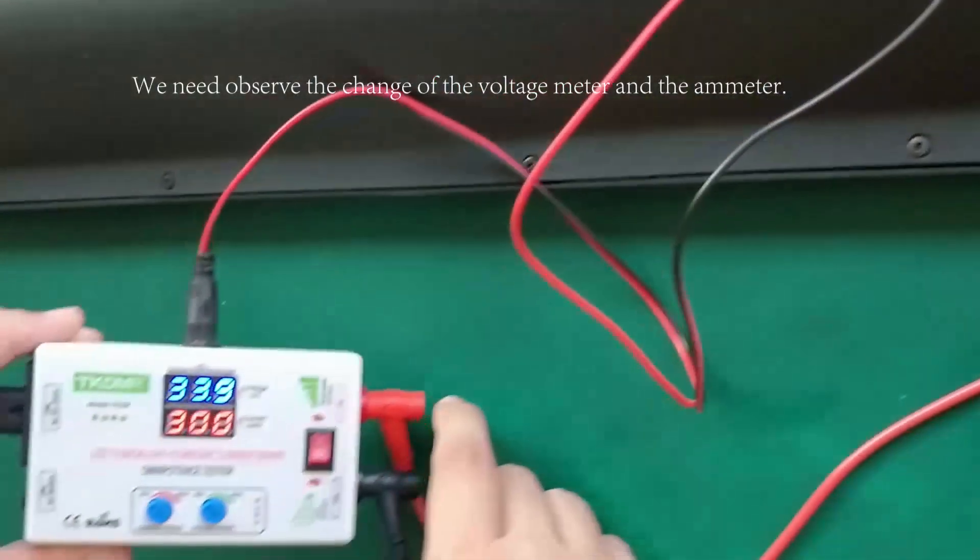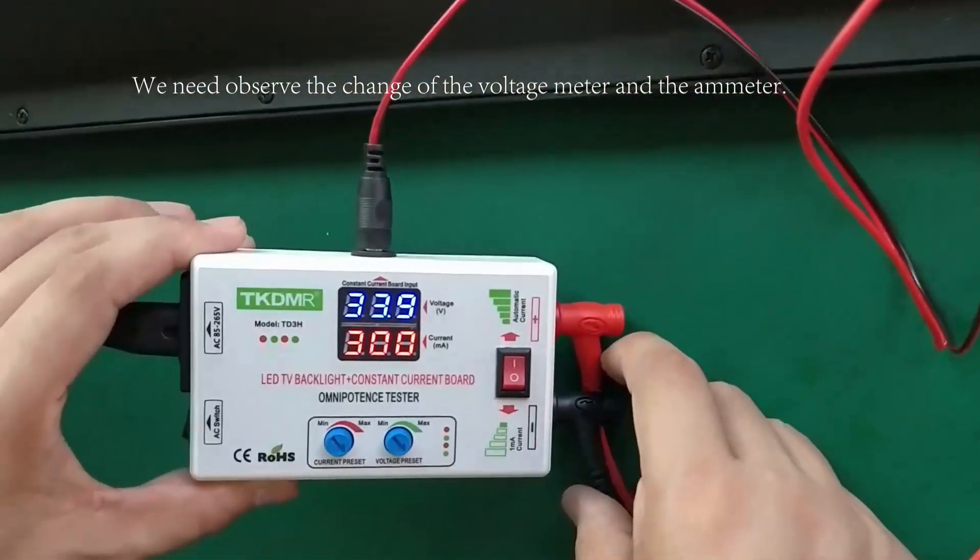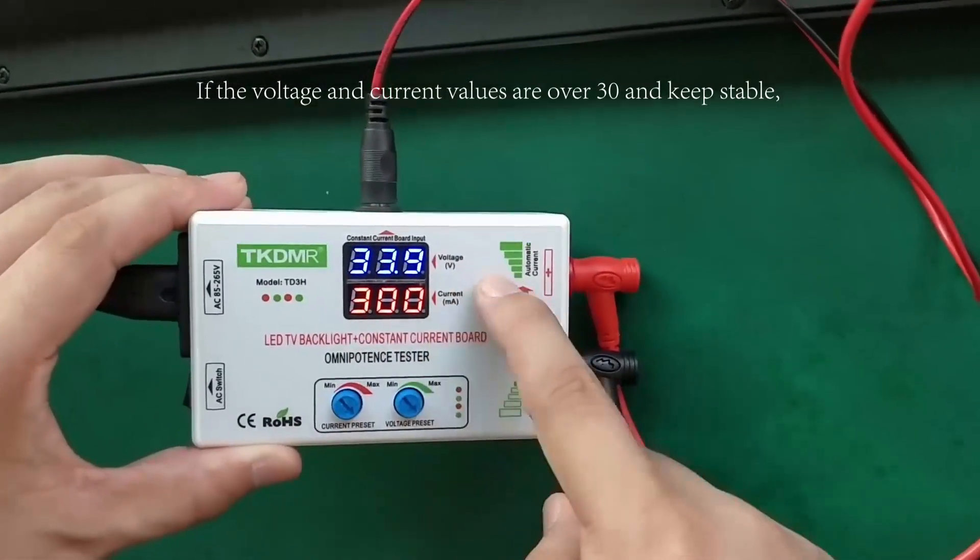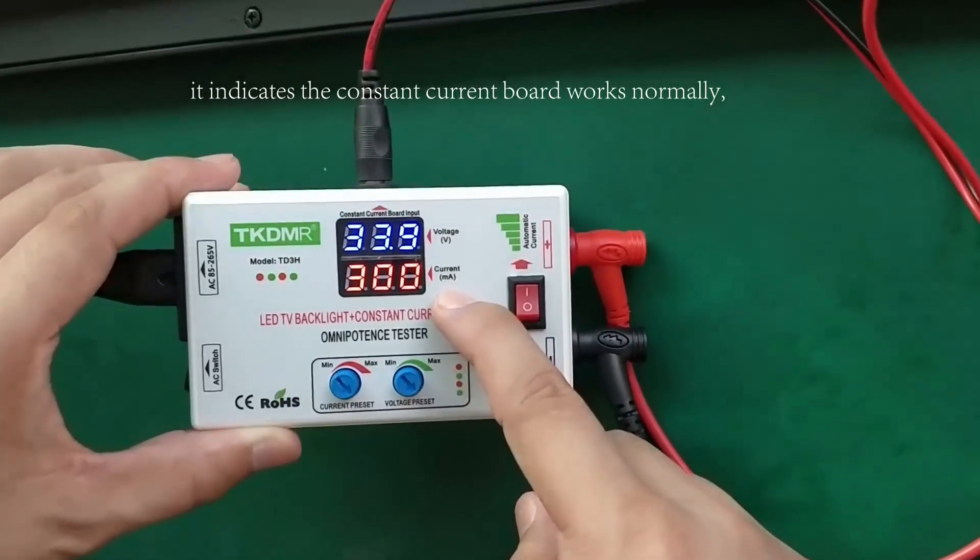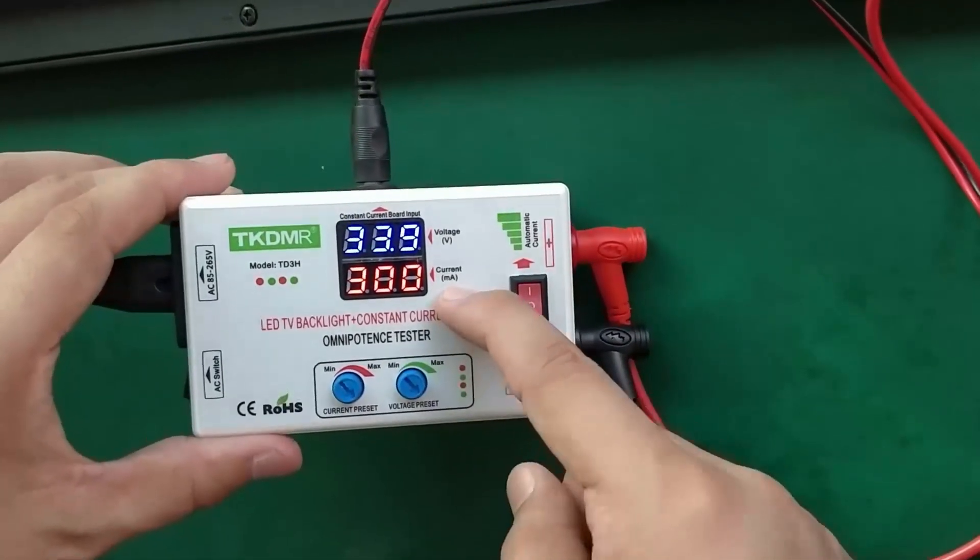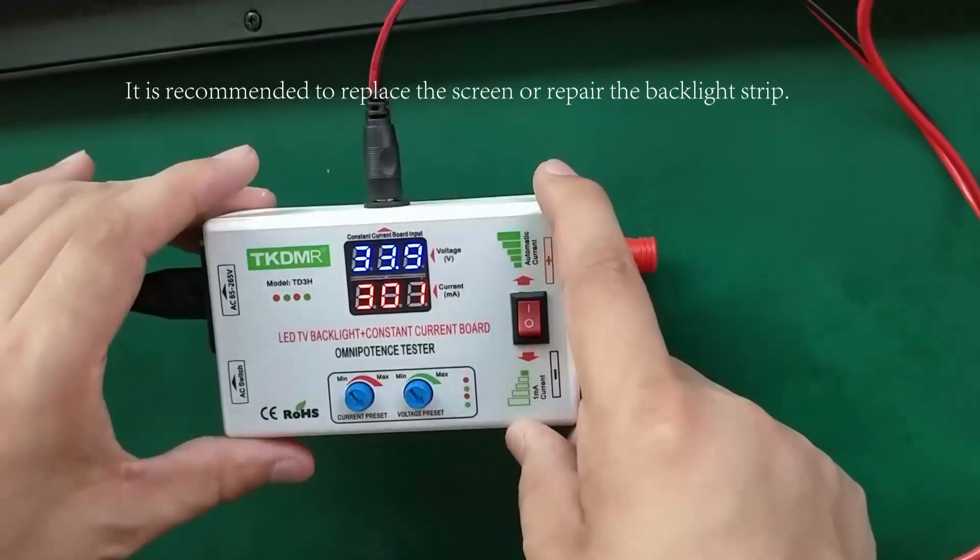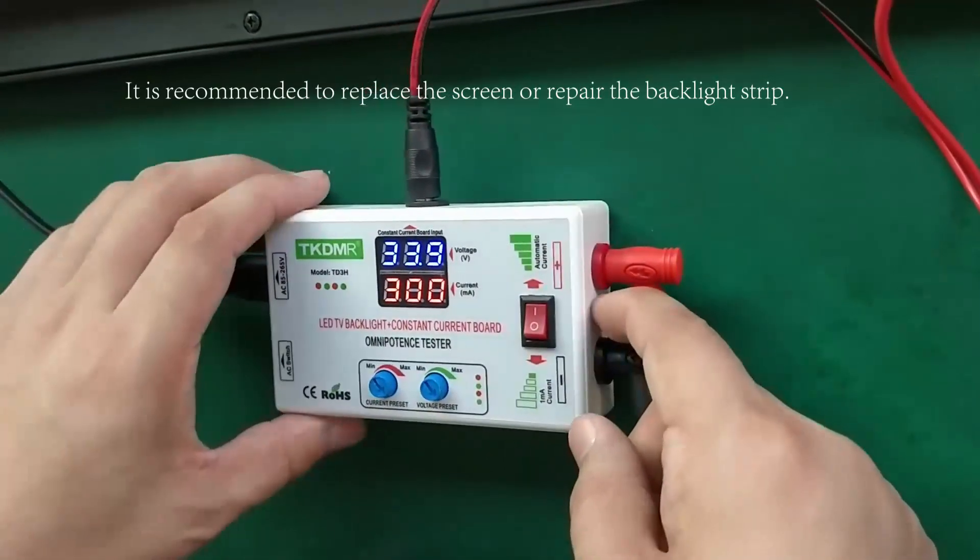We need observe the change of the voltage meter and the ammeter. If the voltage and current values are over 30 and keep stable, it indicates the constant current board works normally. And the problem lies on the light strip. It is recommended to replace the screen or repair the backlight strip.